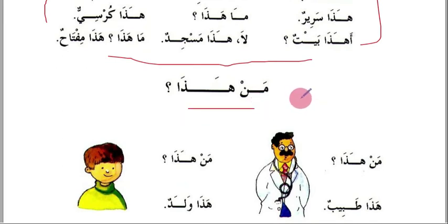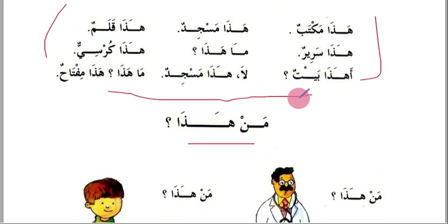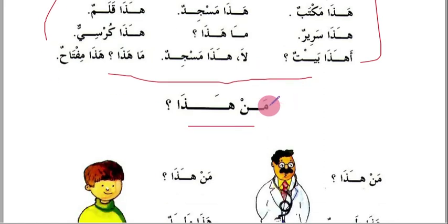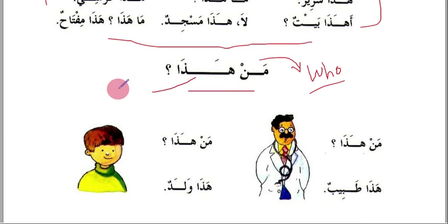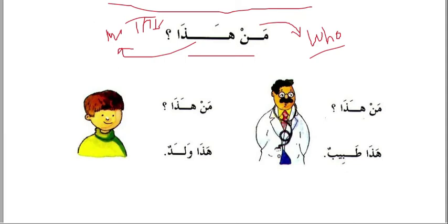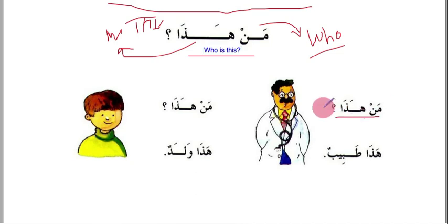We learned how to ask about inanimate objects. Now we learn how to ask about living objects — for example, about people. 'Man' means 'who'. 'Man hadha' means 'who is this'. 'Hadha tabibun' — this is a doctor. 'Man hadha? Hadha waladun' — who is this? This is a boy.